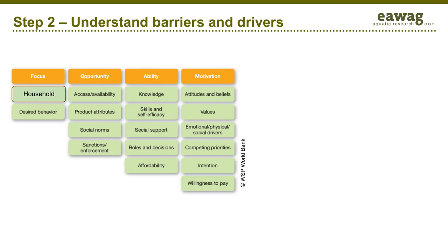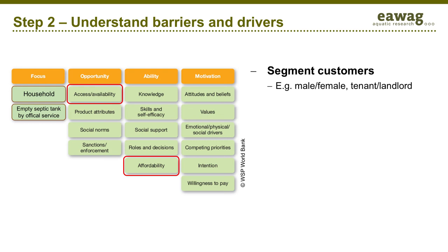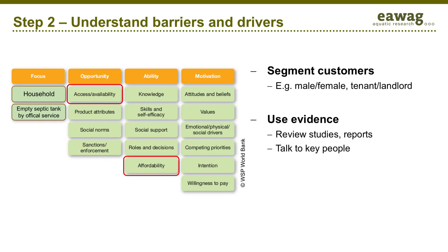RUNNERS and SUNNYFORM help you identify drivers and barriers to a target behavior. Suppose you want to motivate households to empty their septic tank on a regular basis using an official service provider. Some typical questions you should ask are: how easy or difficult is it for the household to access the service, and how affordable is the service to the households? You will find more template questions in the respective guidelines. To produce findings, it is essential to collect segregated data from the target group to identify differences — for example, from men and women, tenants and landlords. You should review previous studies or reports and talk to key stakeholders. Also, use interviews, template questionnaires, and observation protocols to evaluate the targeted behaviors. Always adapt template tools to the local context.